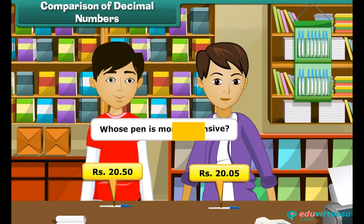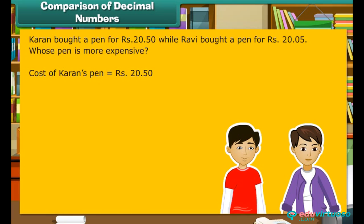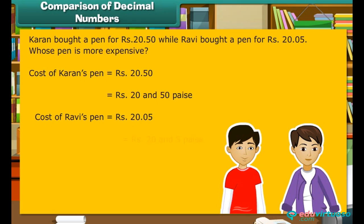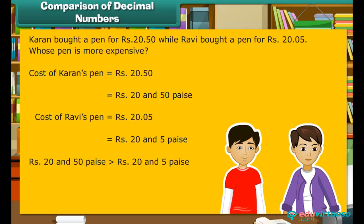Whose pen is more expensive? Comparing the two prices, the tens and ones digits are the same for both. However, Karan's pen has 5 in the tenths place while Ravi's has 0, making Karan's pen more expensive.